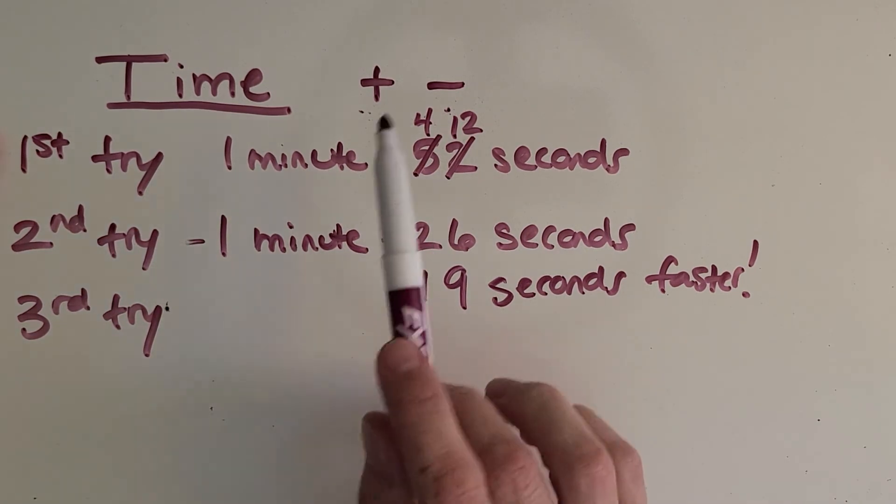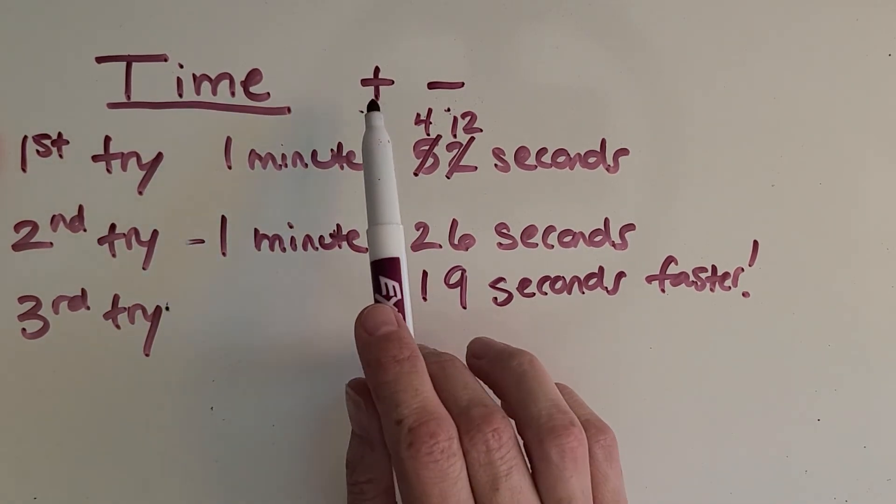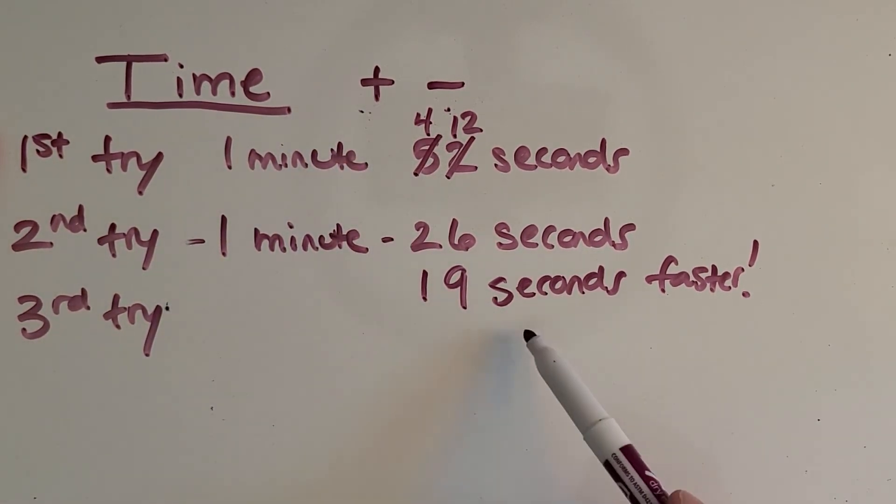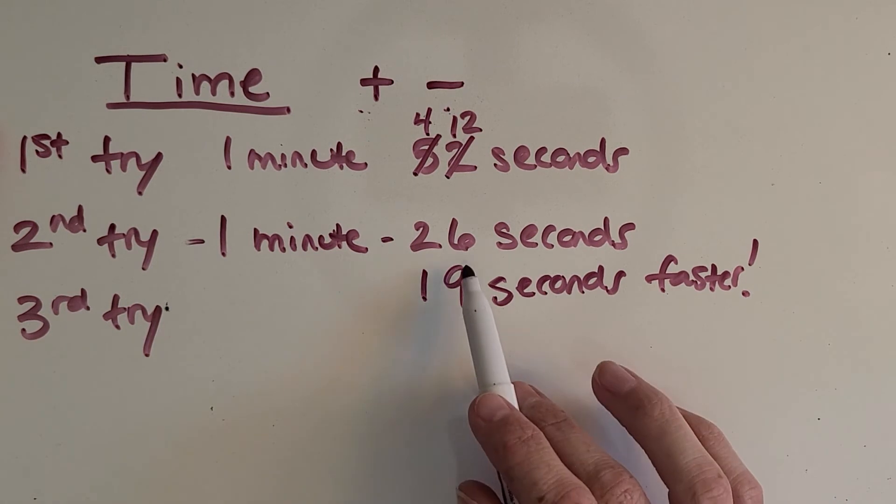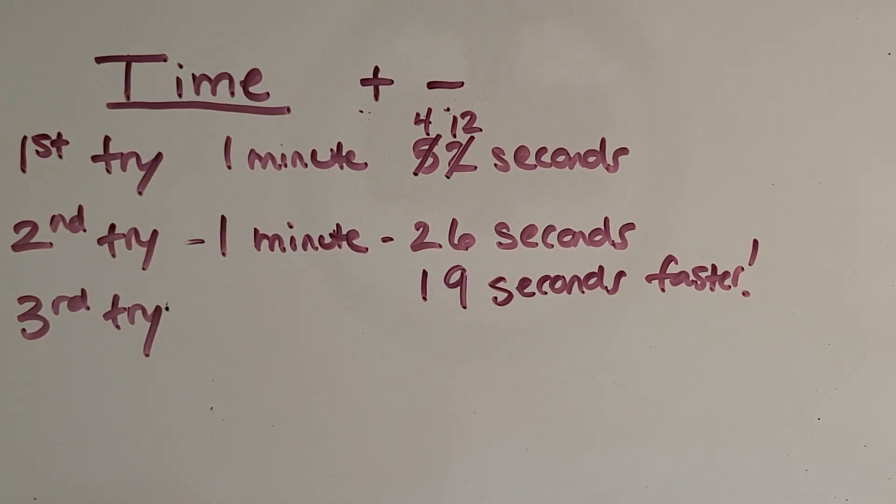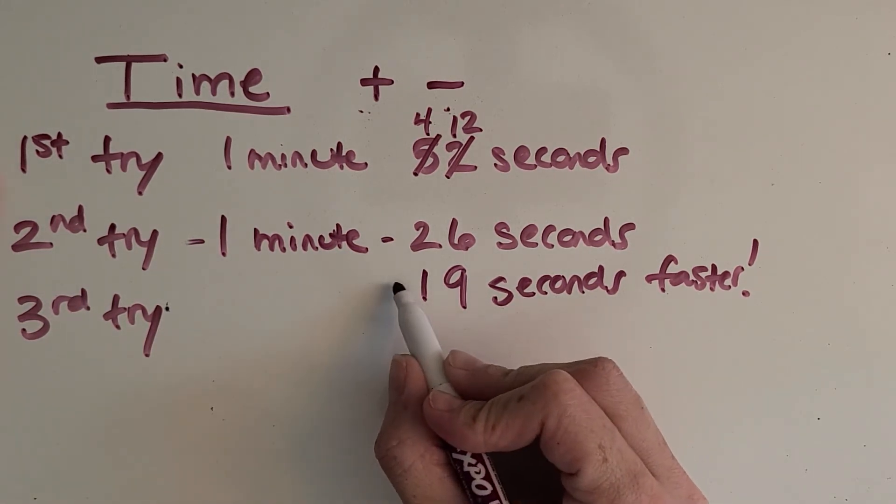Once again, let's ask ourselves, is this an adding type of problem? If I'm 19 seconds faster, am I going to add that on or subtract it from 26? Okay. That could be a tricky question. Faster sounds, you know, better or bigger, but it's actually smaller because you want to have the smallest time to be at the finish line the fastest. Okay. So we're going to subtract.